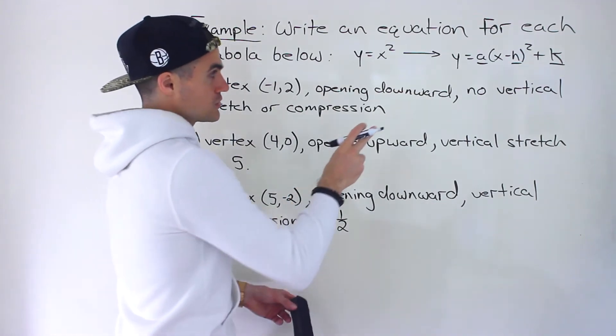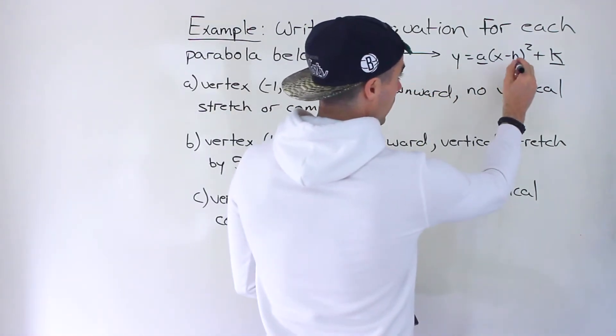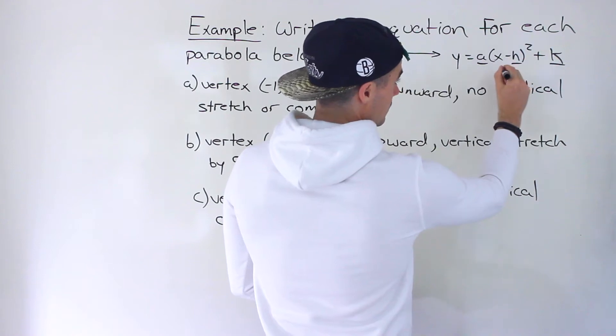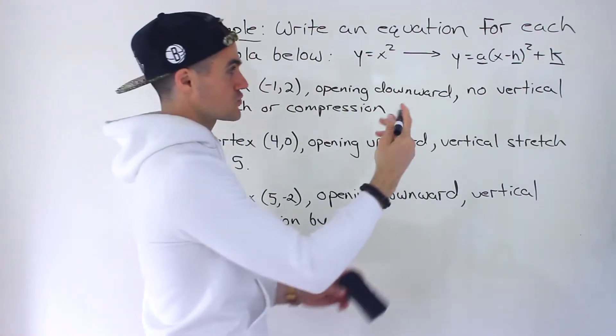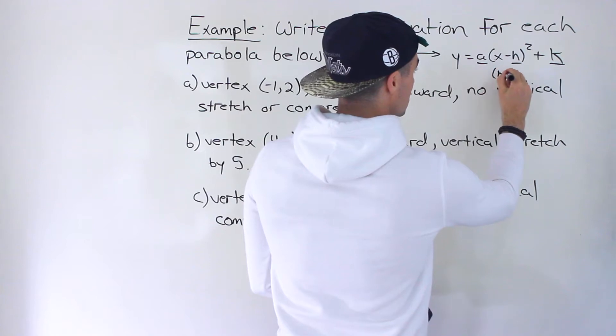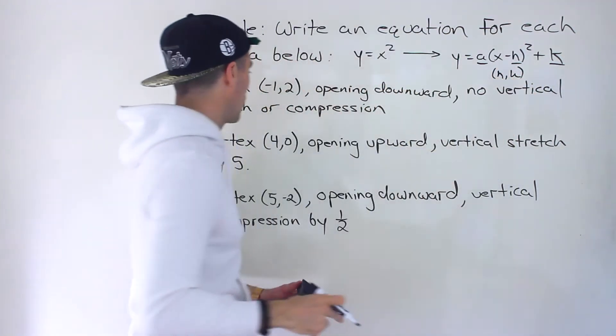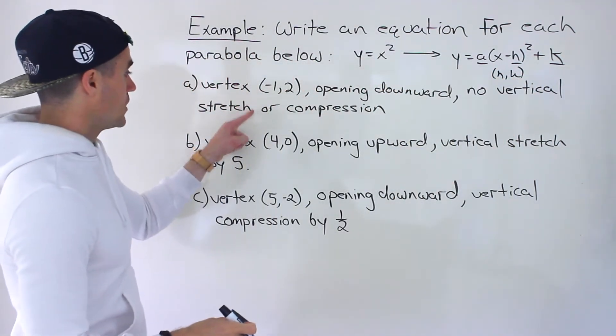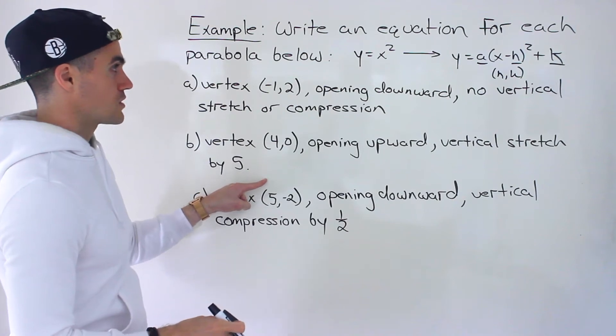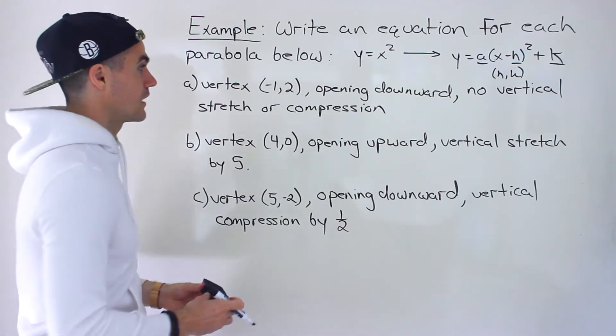If you remember, just as a quick review, vertex form, what is the vertex of this? What's nice about this form is we can get the vertex right away, and it's just that H and K value. And notice that for all of these, we are given the vertex. So automatically, we're given the H and K value.